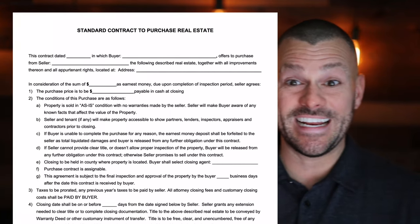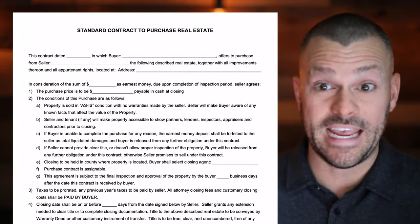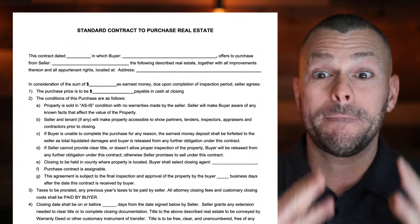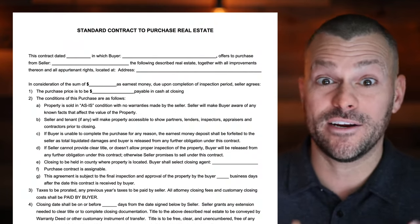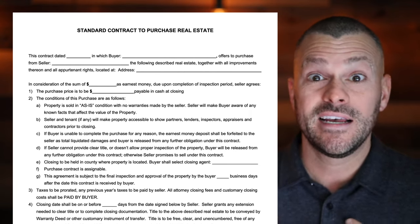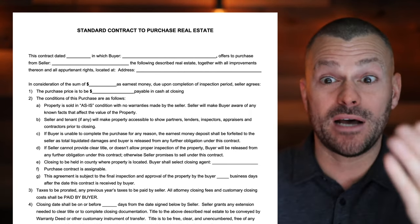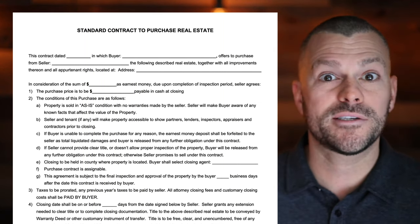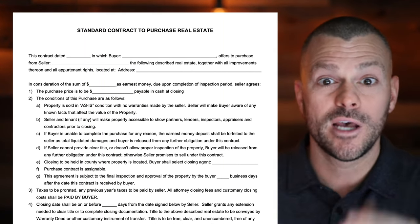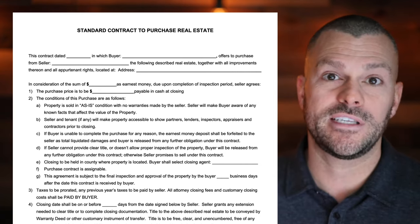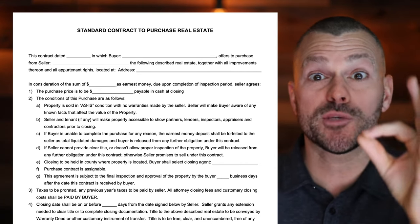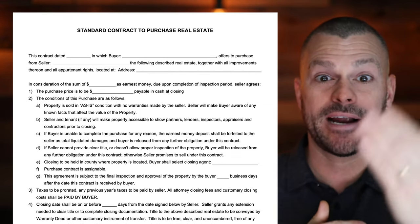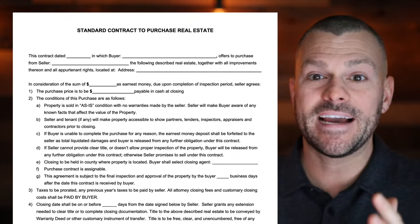This contract dated — you're just going to put today's date in that first blank. Then 'in which the buyer' — if you have an entity or an LLC, put your LLC there. My business is House Sold Easy, so I'd put that. If you have your own home buyer's property group or whatever it is, put it there. If you don't have an LLC, don't freak out — you can just put your name. I'm David Dodge, so I could just put David Dodge as the buyer in that first blank.